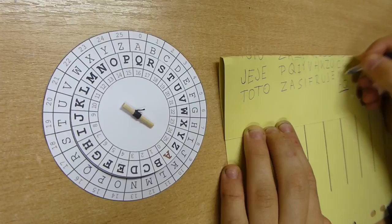Vidíte tedy, že Cézarova šifra je sice velice oblíbená díky své jednoduchosti, ale zároveň je i málo odolná proti prolomení.